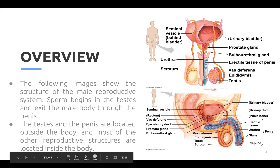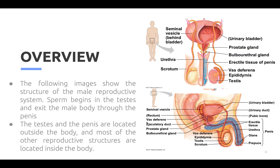The following images show the structure of the male reproductive system. Sperm begins in the testes and exits the male body through the penis. The testes and the penis are located outside of the body.